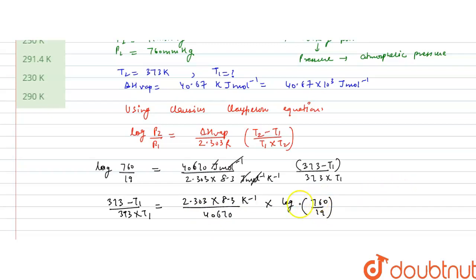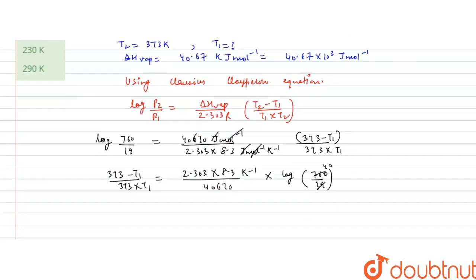Into log of 760 by 19. So 760 by 19 gives us 40, and log 40 value is 1.602. So this gives us 2.303 into 8.3 divided by 40,670 into 1.602.